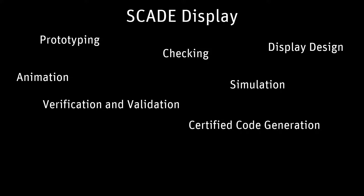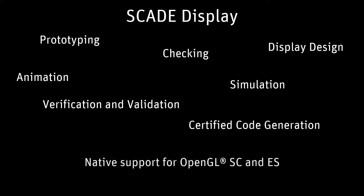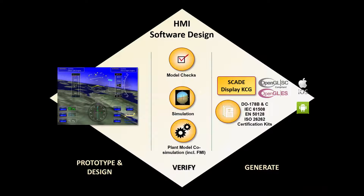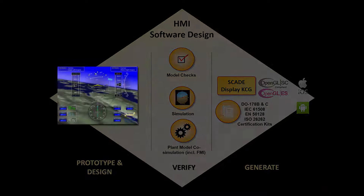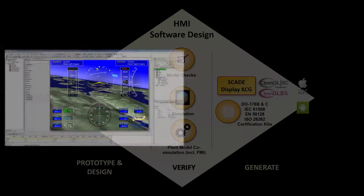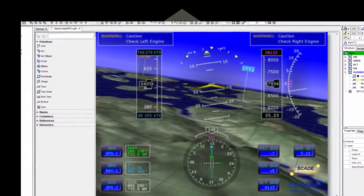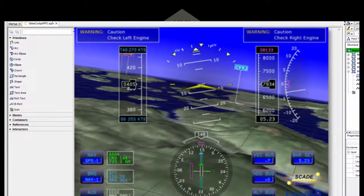It is compliant with the latest versions of the OpenGL SC and ES standards — SC stands for Safety Critical and ES for Embedded Systems. It provides a graphical environment for the design and prototyping of critical embedded HMIs, without writing a single line of software code. What you see is what you get.